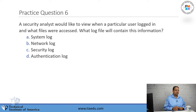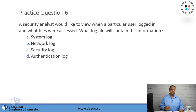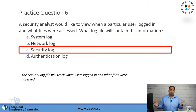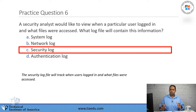Practice question six: A security analyst would like to view when a particular user logged in and what files were accessed. What log file will contain this information? A, system log. B, network log. C, security log. D, authentication log. The answer is security log. The security log file in Windows, if you have auditing turned on for certain folders, will show you who accessed it, when they accessed it, when they logged in and out, and what files they accessed — basically your user movements.